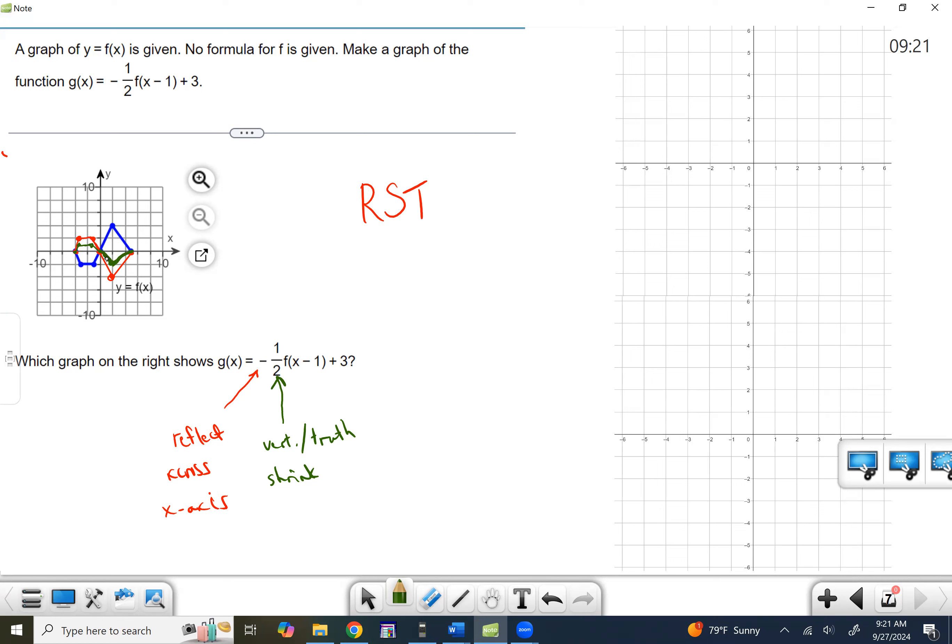Now, if you want to get the actual ordered pairs, you can do that. I think it's going to be kind of hard on this one because they're not at nice spots. So that's why I didn't take that approach. I just took the, hey, let's just make it look half the size. Let's shrink it down.